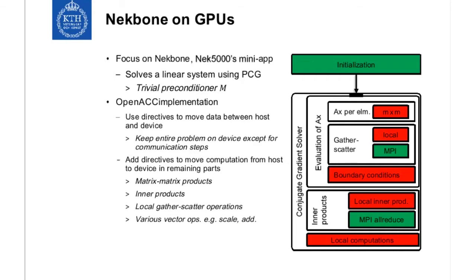The good news is that besides those steps, there are many GPU-friendly parts where we can do a lot of computation without moving data. First, the computation of AX to expand the Krylov subspace — the matrix-vector multiplication per element, the small MXM calls shown in the loop. Then the local part of the gather-scatter can be done by just adding OpenACC directives. Also applying boundary conditions, the local part of inner products, and various vector operations like scale-and-add for the CG solver. For example, the vector operations are in a file called math.f — going through and adding OpenACC directives, everything worked out of the box, as intended.